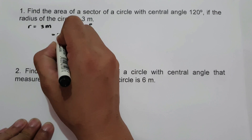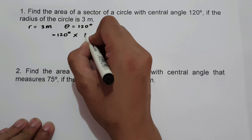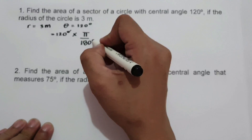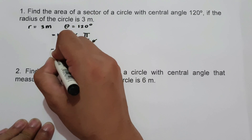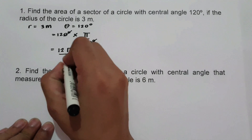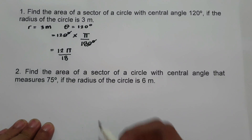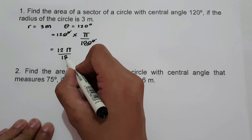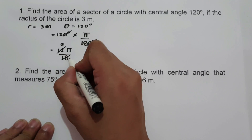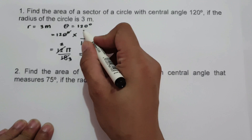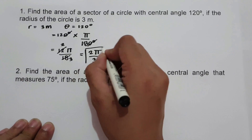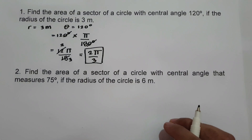We have 120 degrees multiplied by pi over 180 degrees. We cancel the degree symbol and get 12 pi over 18. Since 12 and 18 are both divisible by 6, 12 becomes 2 and 18 becomes 3. Therefore, 120 degrees in radian is 2 pi over 3. This will be the value of our central angle.